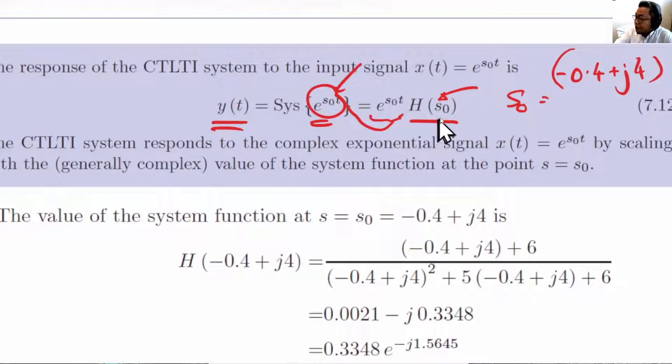In another chapter of the lecture, we have shown that H(s₀) is called the frequency response of the system. And the frequency response of the system evaluated at s₀ can be used to multiply by the eigenfunction e^(s₀t) to produce the output.